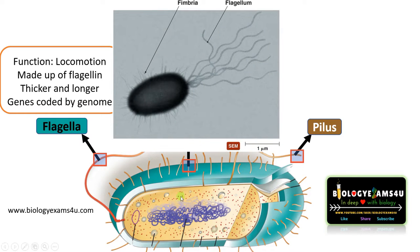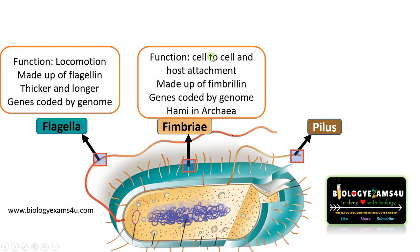The second structure is fimbriae. As you see, this short bristle-like structure covering the entire cell is called fimbriae. Fimbriae is meant for cell-to-cell attachment, or cell-to-surface, or cell-to-host attachment of a prokaryotic cell. It is made up of a protein called fimbrillin and the genes are encoded by the genome. In archaebacteria, there is a special type of hook-like appendage which is called hami.